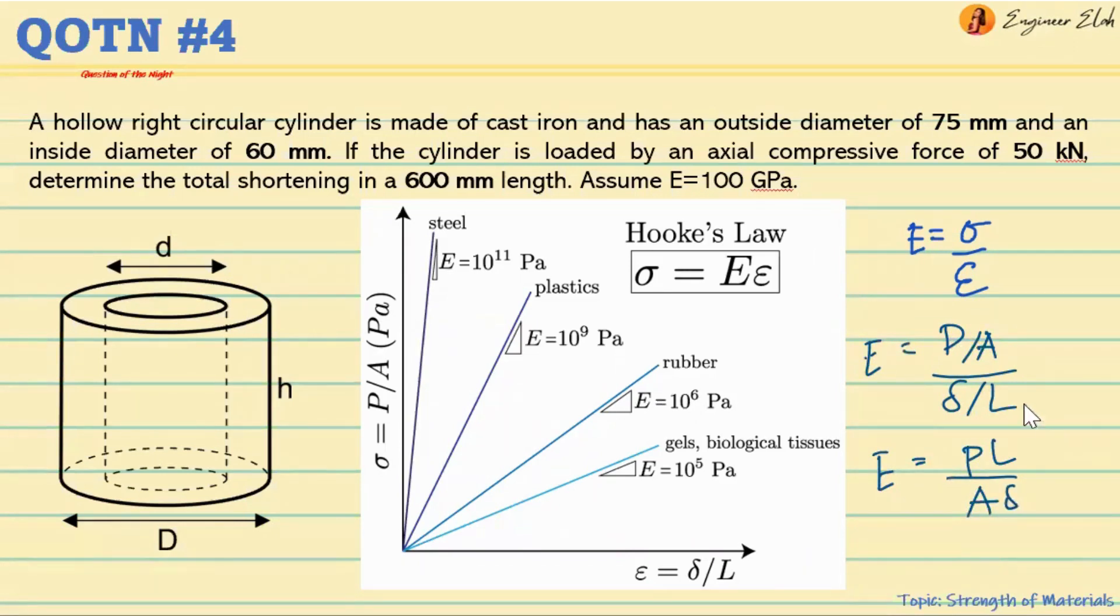If we read the problem again, we have the given outside diameter and inside diameter, and that's important in calculating the area because it's a hollow right circular cylinder. So this is the area we're going to calculate, and we have a formula for that.